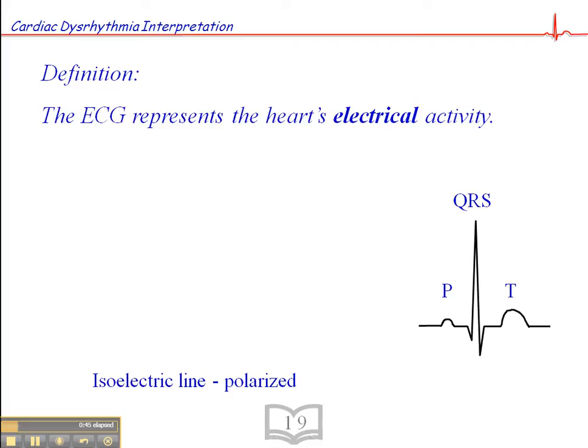And this is important because sometimes you'll see rhythms where their pulse may be absent. So we can't just assume that if there's a normal ECG that there's a pulse with that. It's purely a representation of the heart's electrical activity.